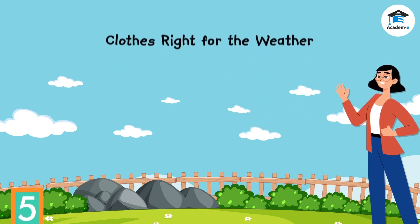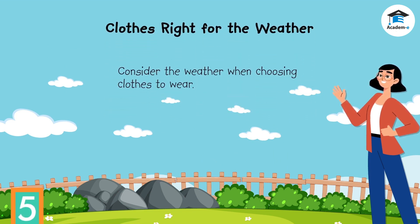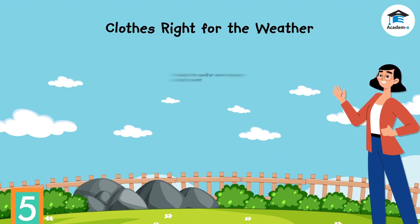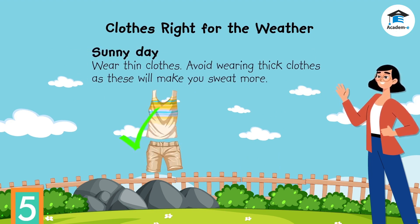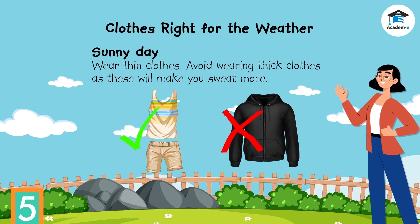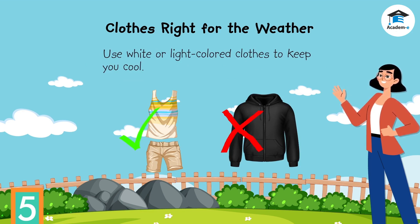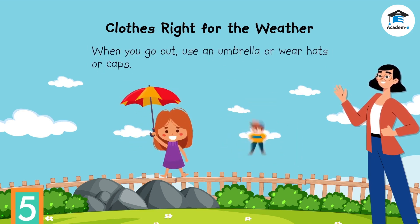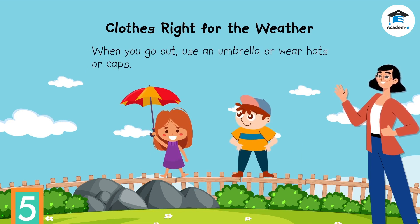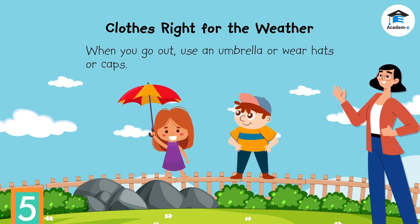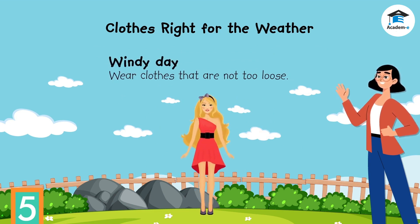Clothes right for the weather: the weather is one of the things you must consider when choosing clothes to wear; you may also need to use things other than your clothes to stay comfortable and protected. On sunny days, wear thin clothes and avoid wearing thick clothes as these will make you sweat more. Use white or light colored clothes because they do not absorb the heat of the sun and will help keep you cool. When you go out, use an umbrella or wear hats or caps to protect you from the heat. On windy days, wear clothes that are not too loose, as loose clothes may get in your way when the wind blows.